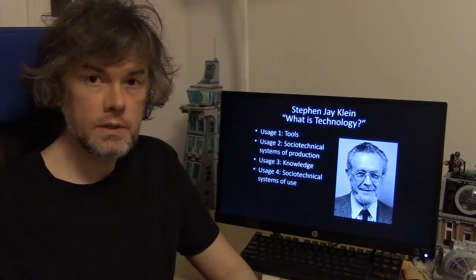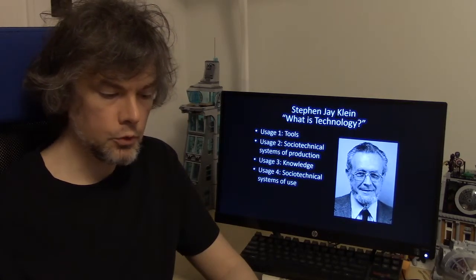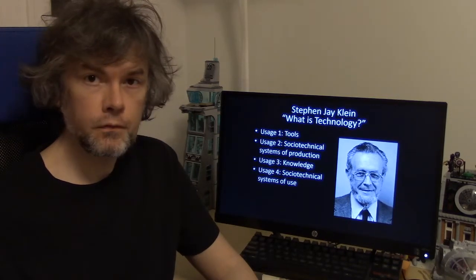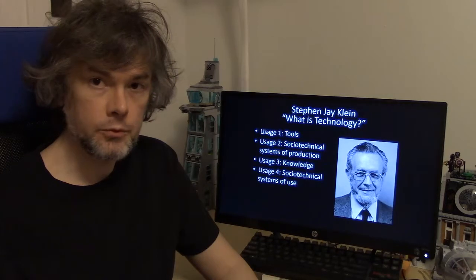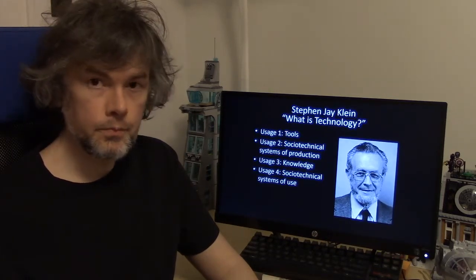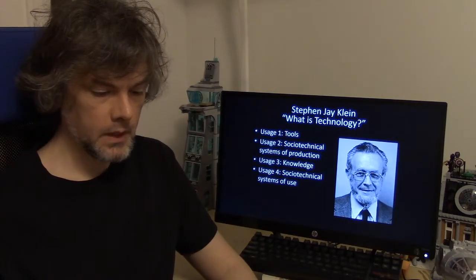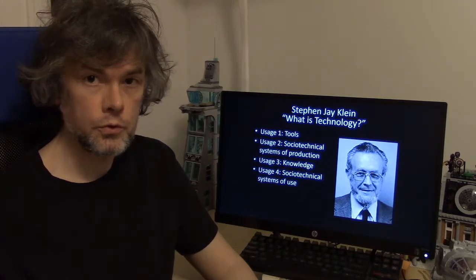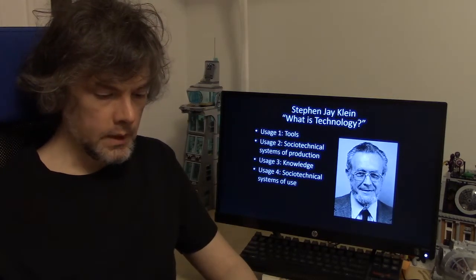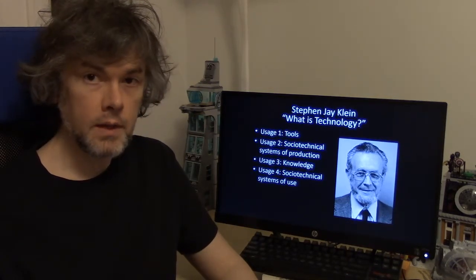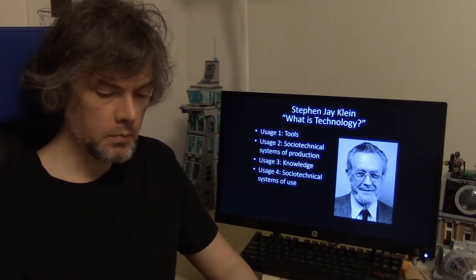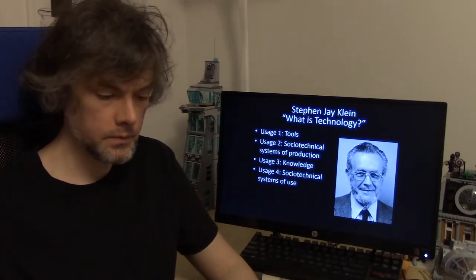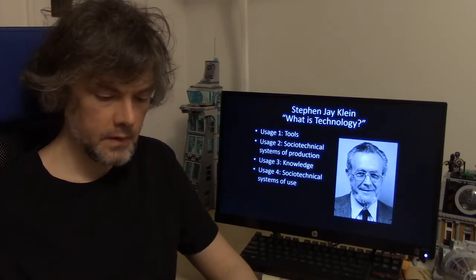Stephen Klein's "What is Technology" helps us break down exactly what we mean when we use the ubiquitous term technology. He gives us four usages. Usage one has to do with hardware or artifacts or tools — hammers, smartphones, and cars. Usage two has to do with socio-technical systems of manufacture, the systems and tools that make the technology we use in usage one. Usage three has to do with what we know: knowledge, technique, know-how, and methodology. Usage four has to do with a socio-technical system of use — a system that combines hardware, people, and other things to do what human beings cannot otherwise accomplish without these systems. These are extensions of ourselves. This is the cyborg.